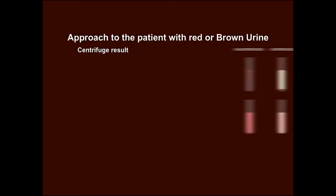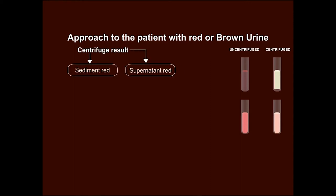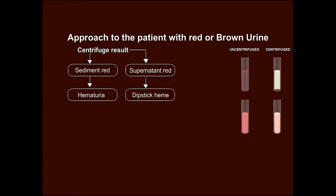The initial step is centrifuging the urine sample to see if red color is in the sediment or the supernatant. If the sediment is red and supernatant clear, it indicates hematuria. If the supernatant is red, perform a dipstick test for heme. If the test is negative, rule out biliuria, phenazopyridine ingestion or porphyria.